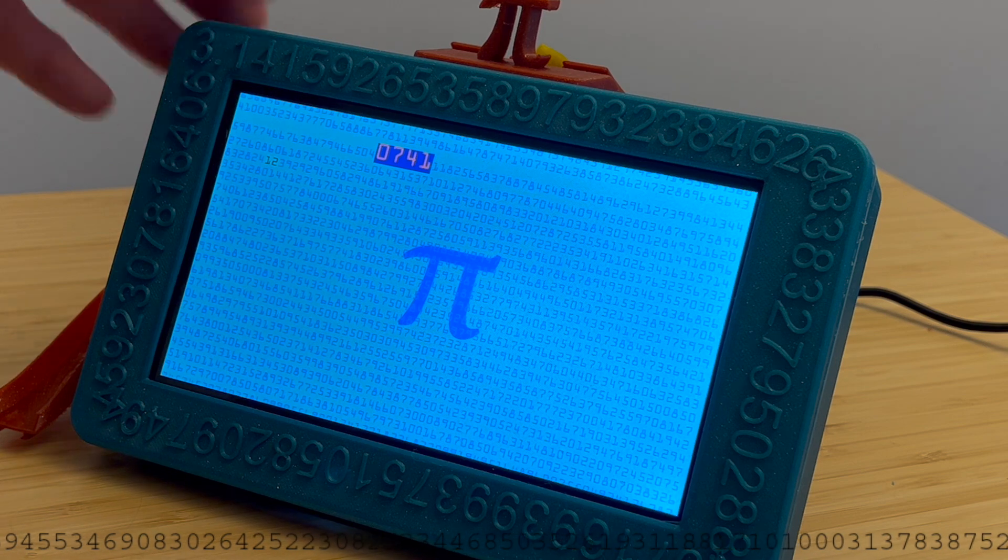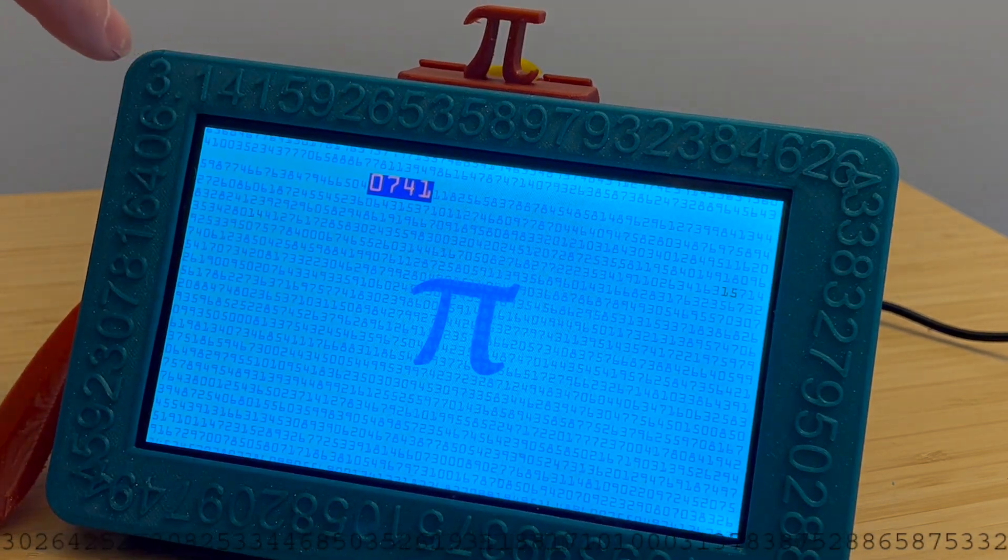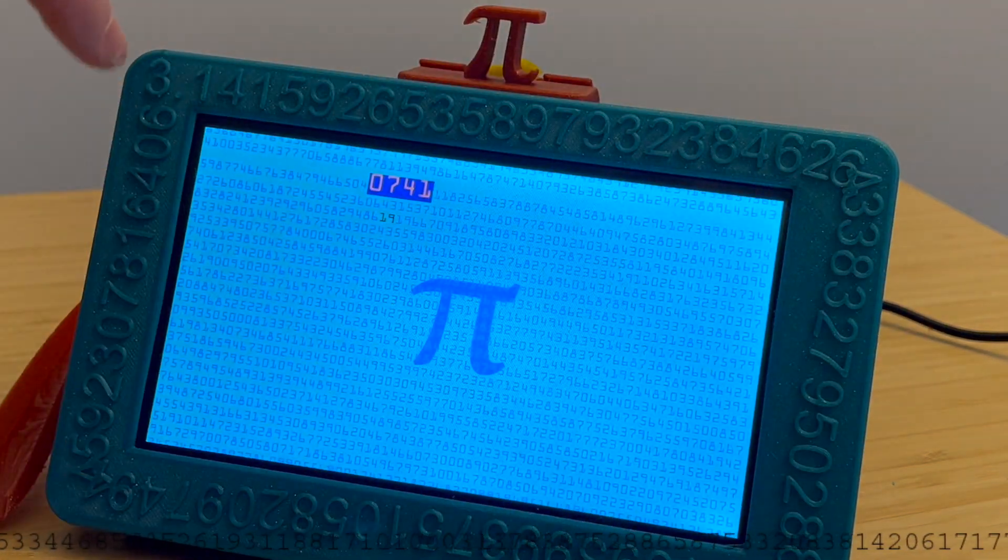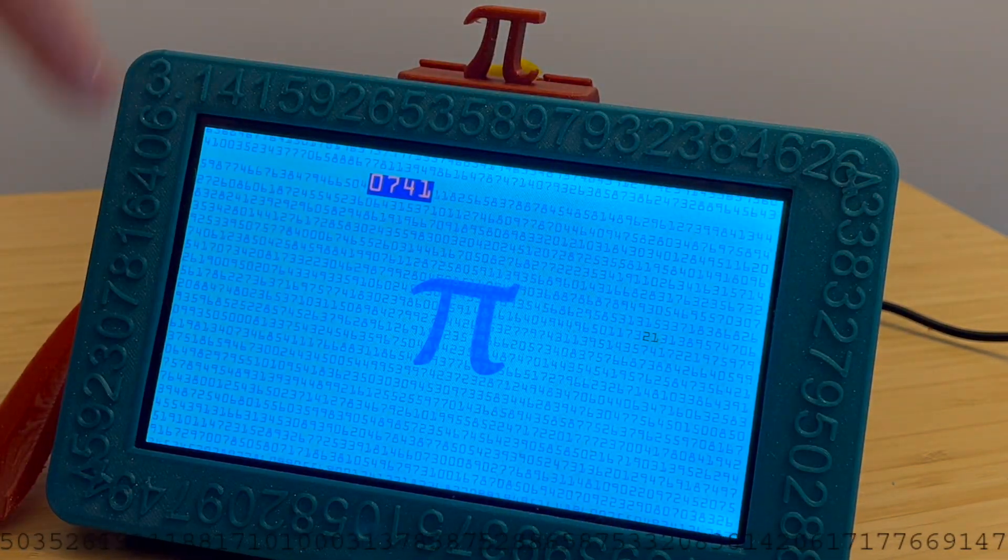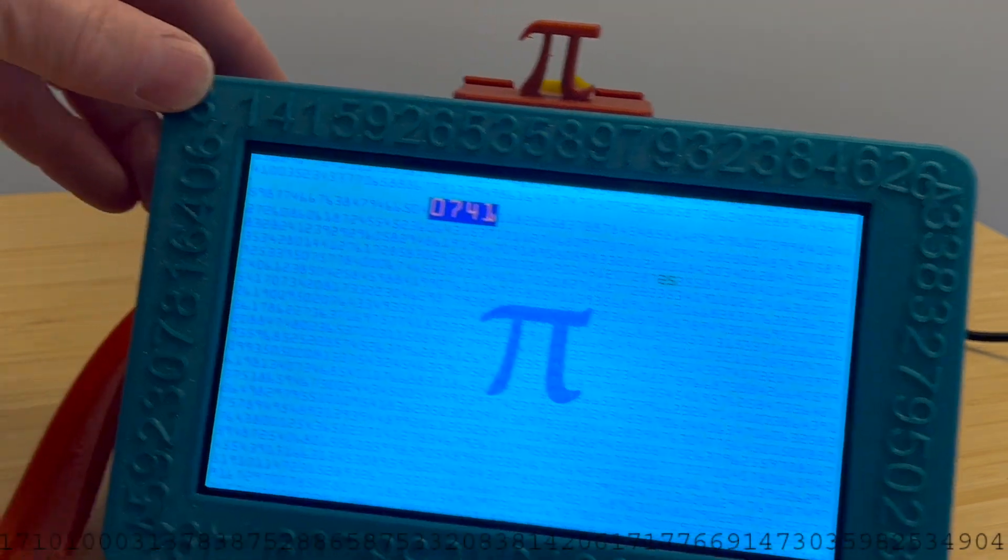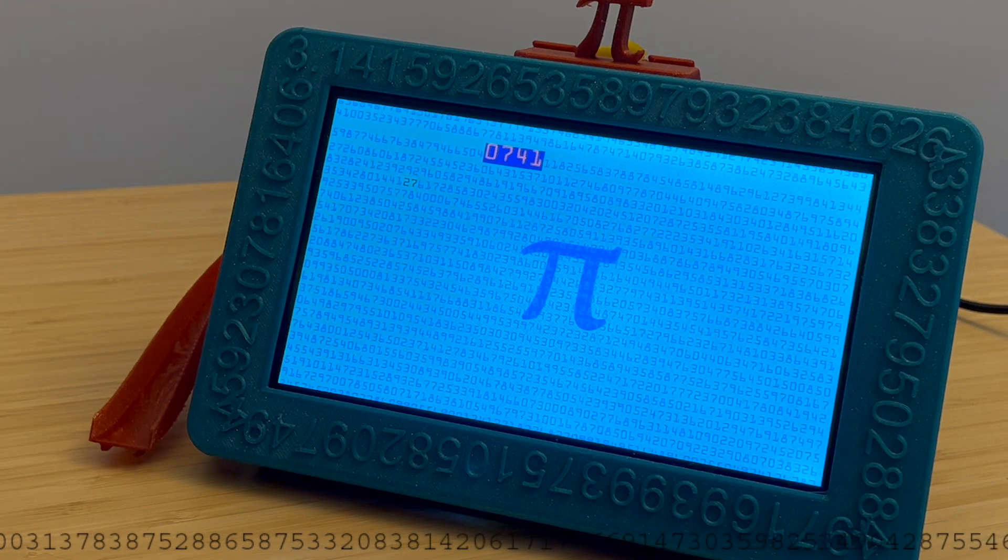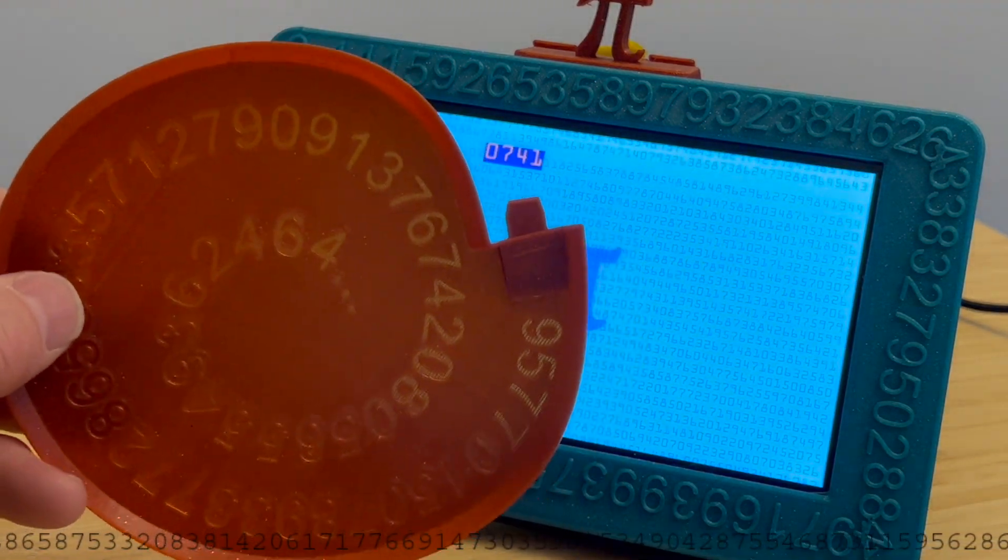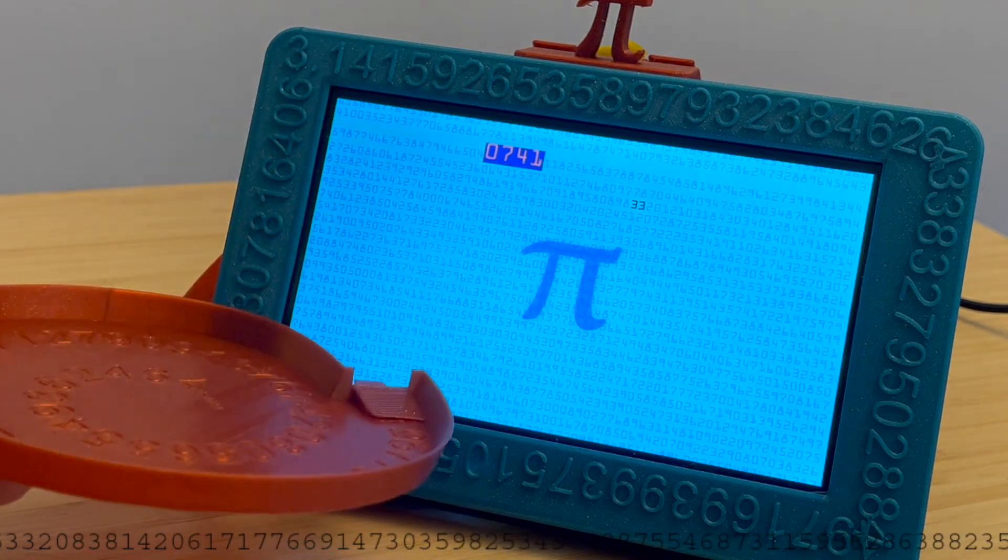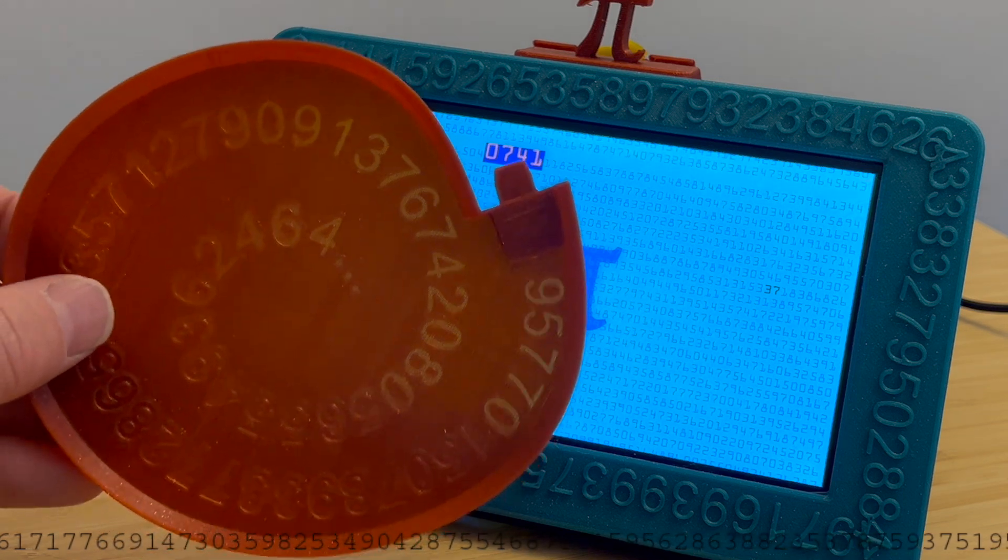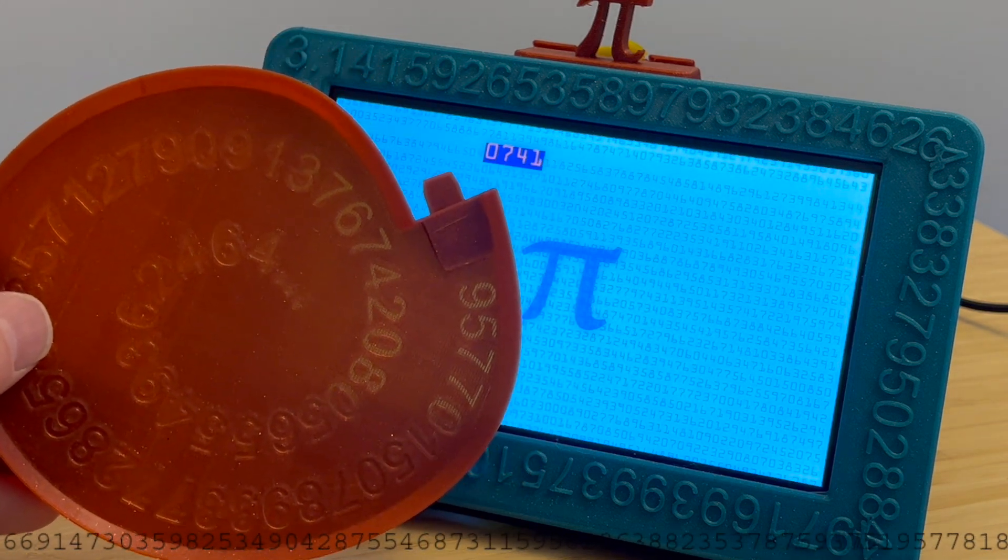You'll see it starts with 3.14, Pi all the way around, starting here. There's 70-some-odd digits of Pi on the front here, and, you know, make it fun. These are the last - I printed out, you know, pretty thin. I call this a pie plate, of course.